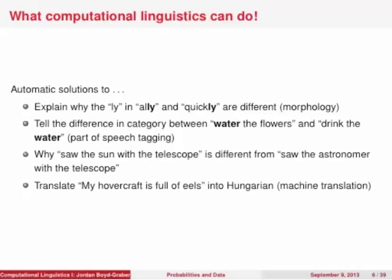Some specific examples of what we'll be doing in this course: we'll learn why the '-ly' in 'ally' and the '-ly' in 'quickly' are different — this is called morphology. We'll create automatic solutions that can tell the difference in part of speech between 'water' in 'water the flowers' and 'drink the water.' We'll build algorithms to detect the difference between 'saw the sun with a telescope' versus 'saw the astronomer with the telescope.' And we'll learn how to translate a phrase in English into the language of your choice.